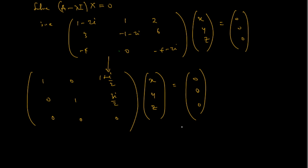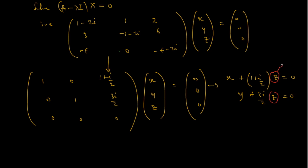So when we write this in equation form, we have 1 times x plus (1+i)/2 times z equals 0. The next one is 1 times y, which is y, plus 3i over 2 times z equals 0. Either way, we still have z as a free variable.